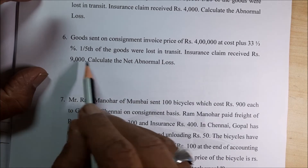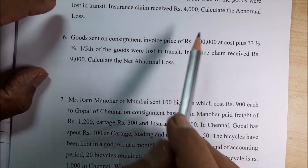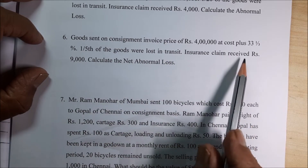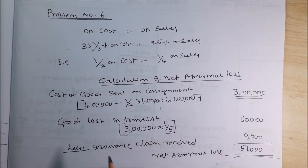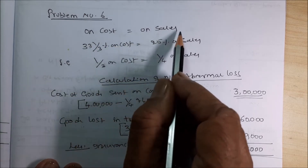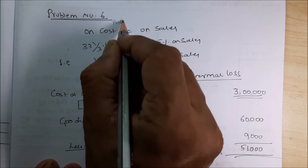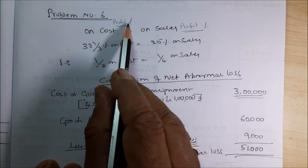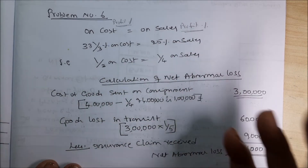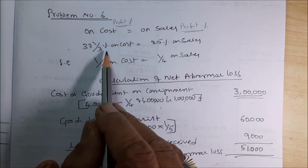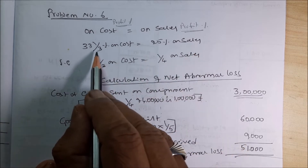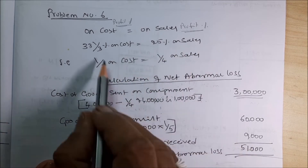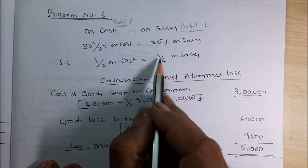Insurance claim received rupees 9000. Calculate the net abnormal loss. In the previous problem we had only goods costing, but now profit is also given. On cost profit percentage equals on sales profit percentage. 33 one-third percent on cost is equal to 25 percent on sales. That means one-third of cost equals one-fourth of sales — so 25 percent on sales is 1 by 4.